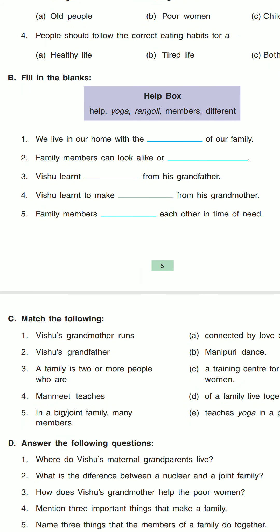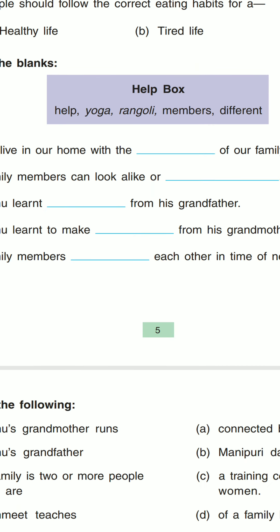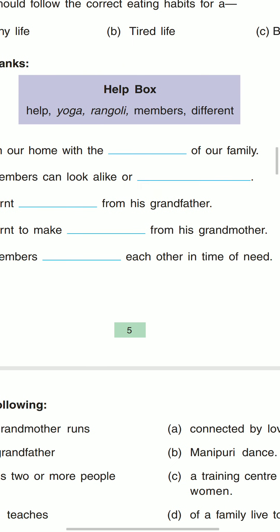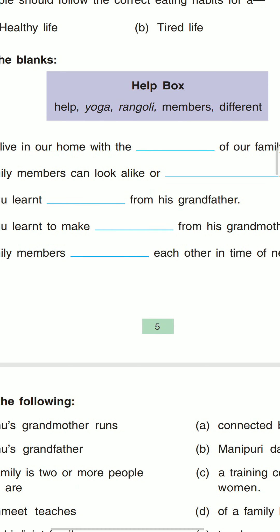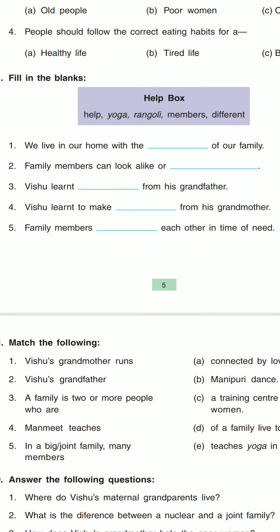Now fill in the blanks — Part B. Look at the box where the words are: swing, help, yoga, rangoli, members, different, life. Question number one: we live in our home with the members of our family. The answer will be 'members.'